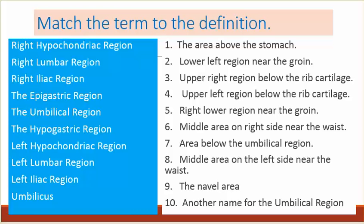Match the term to the definition. The terms are: right hypochondriac region, right lumbar region, right iliac region, the epigastric region, the umbilical region, the hypogastric region, left hypochondriac region, left lumbar region, left iliac region, umbilicus.